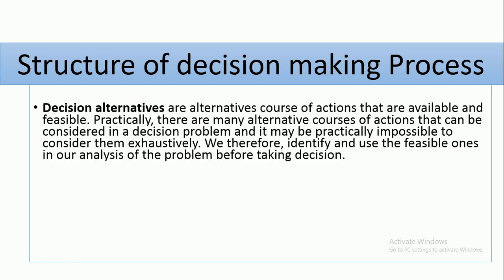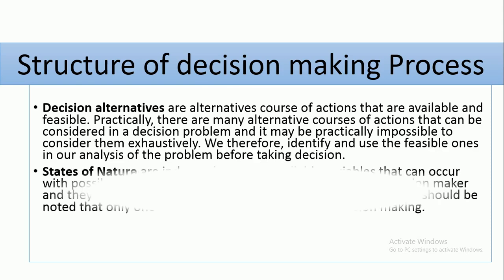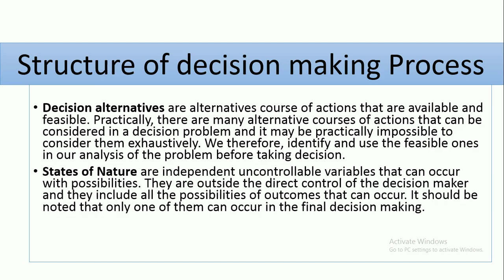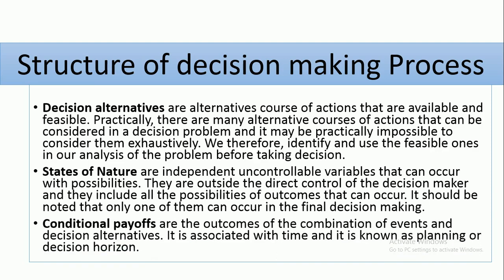What are the structures of decision analysis? The first is decision alternatives — these are the alternative courses of action that are available and feasible. The second is state of nature: independent, uncontrollable variables (IUV) that occur with certain probabilities. The third structure is conditional payoffs, which represent the outcomes of the combination of events and decision alternatives. Conditional payoffs equal the combination of events and decision alternatives, and the equality represents the outcome or result.